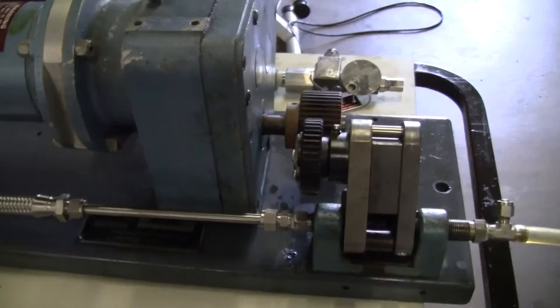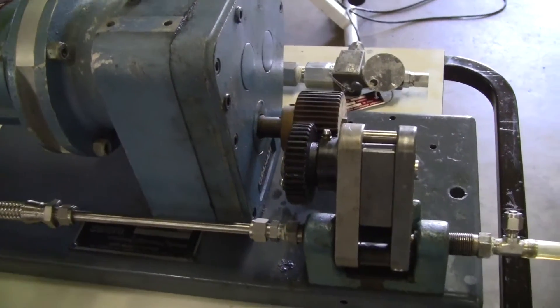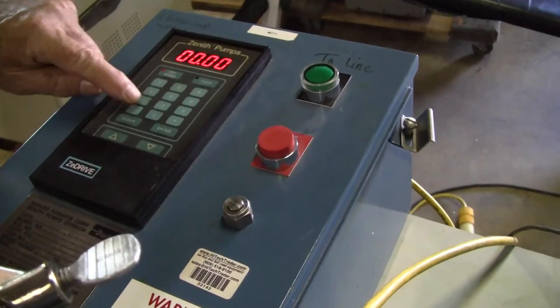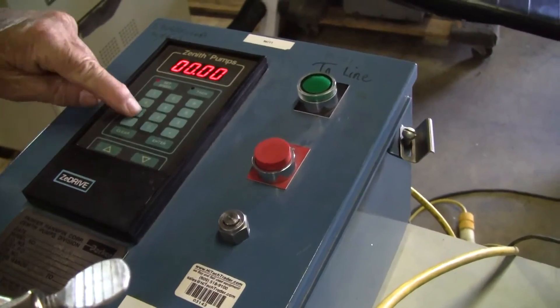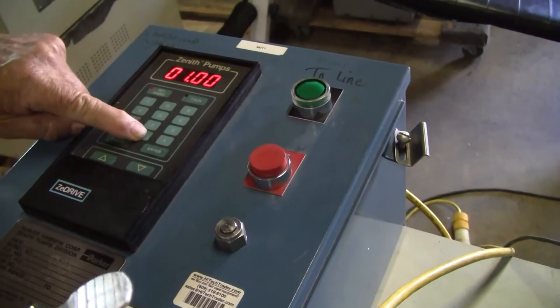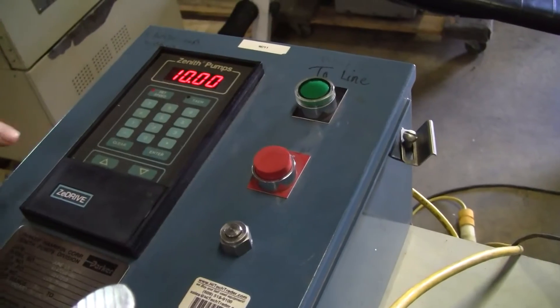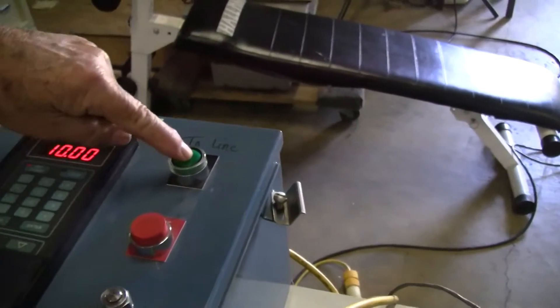And at 10 RPM that's 0.4629 gallons per minute. We're going to program the controller to do 10 right now. Hit clear and then punch in the numbers. And it's entered. And then you can hit green to go.